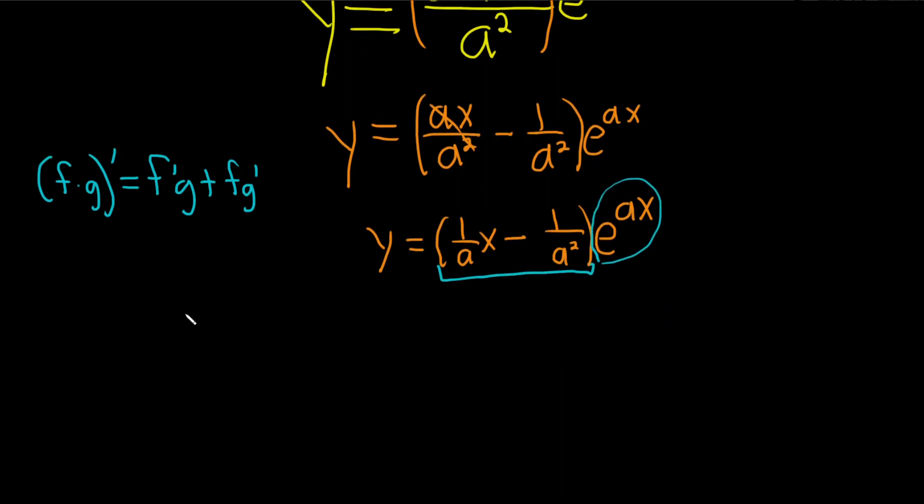Let's go ahead and take those derivatives. So dy dx. So the derivative here of 1 over a times x is just 1 over a because this is a constant. Like if you were differentiating 2x, you would just get 2, right? The derivative of x is 1 and you're just left with 1 over a. The derivative of 1 over a squared is 0 because that's just a pure constant.